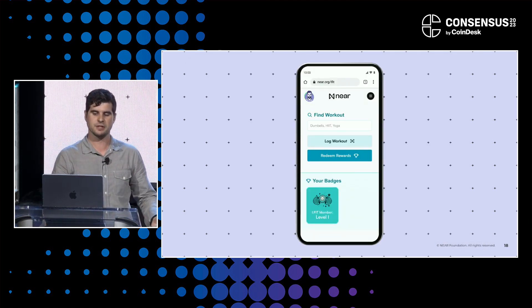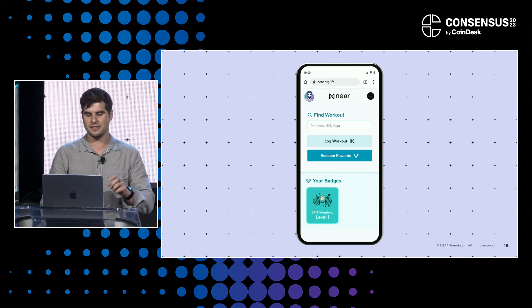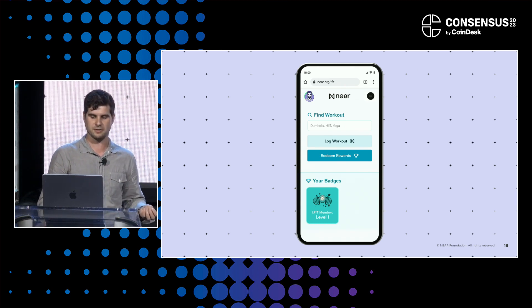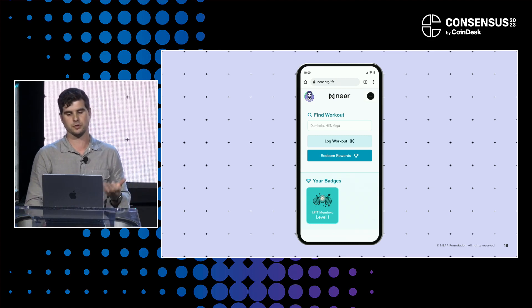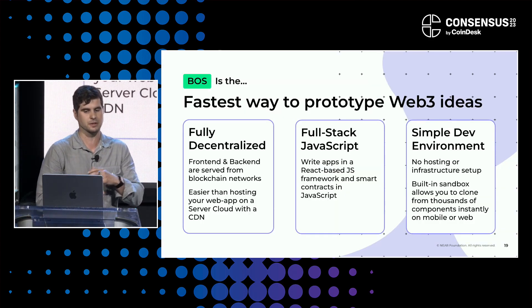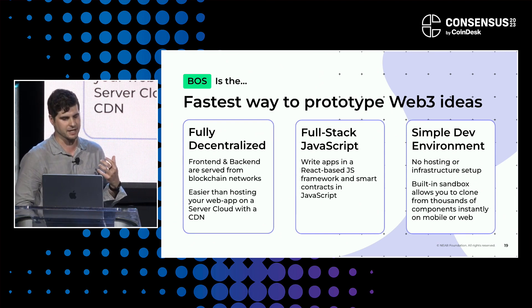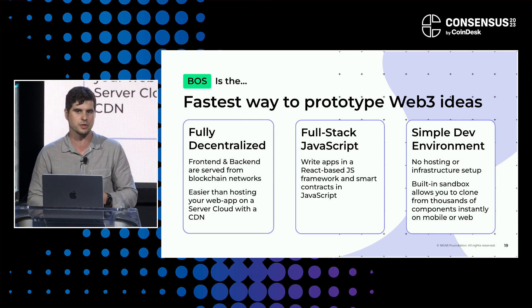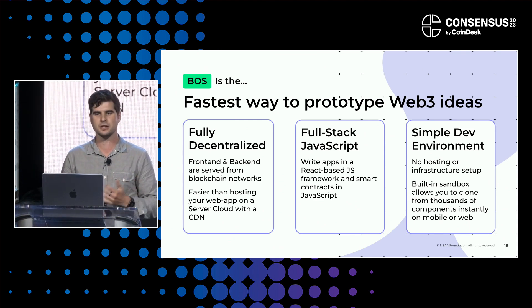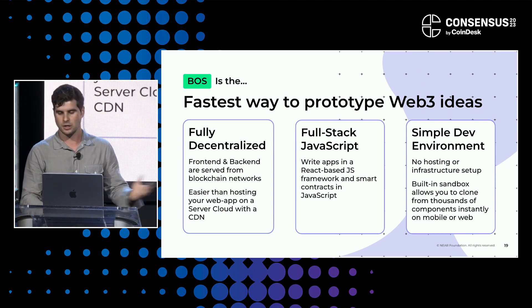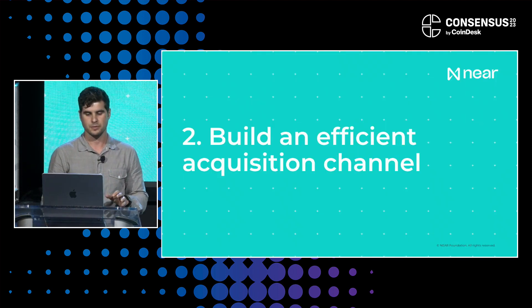From that photo sharing app, he's got a log workout button and the ability to do rewards through NFTs — people can already start earning their first one. This is the fastest way to prototype: completely decentralized, front end to back end. It's easier than hosting a web app on a CDN and server cloud — you can do it in minutes. It's full-stack JavaScript, no new skills needed, no infrastructure, no hosting. Just clone those components.